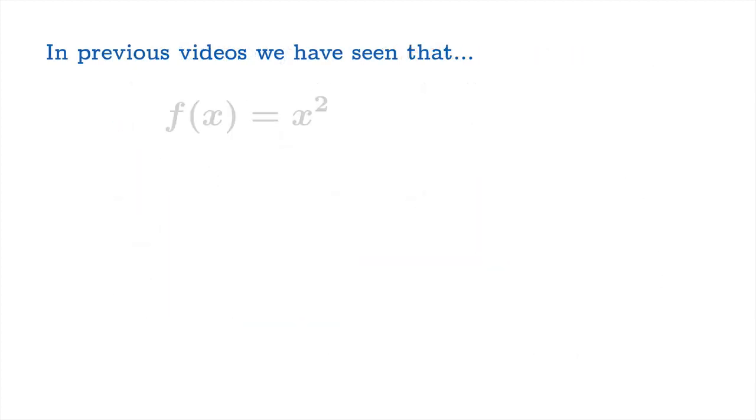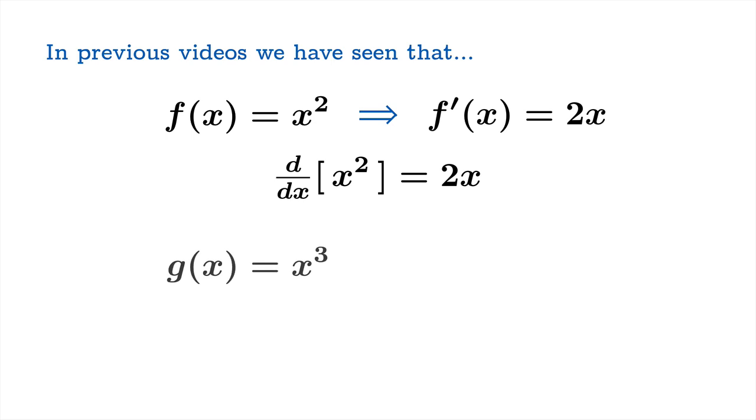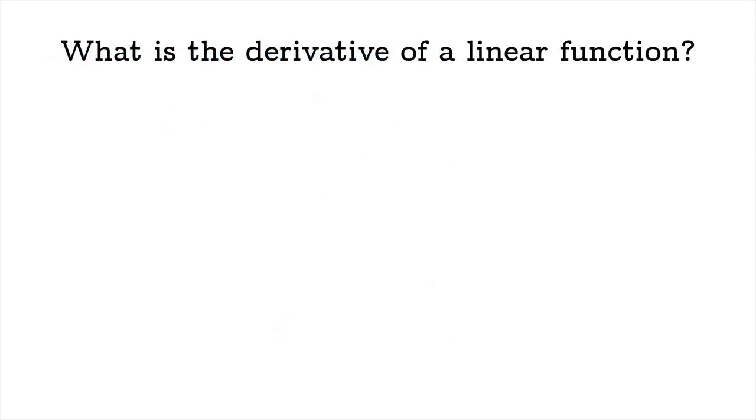In previous videos we've seen that if f of x equals x squared, then f prime of x is equal to 2x, or in Leibniz notation the derivative of x squared is 2x. And if g of x is equal to x cubed, then g prime of x is equal to 3x squared, or in Leibniz notation the derivative of x cubed is 3x squared. And we're going to ask the question, what is the derivative of a linear function?